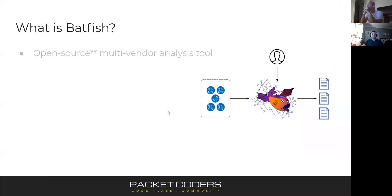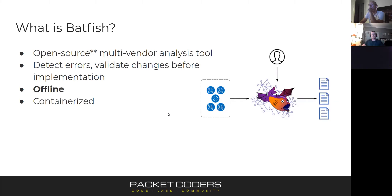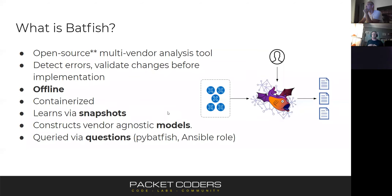So what is Batfish? Batfish is an open source multi-vendor analysis tool that allows you to detect errors and validate changes before they're implemented in your network. It's an offline tool — a containerized service that you spin up. The way it learns about your network is via things known as snapshots. It constructs vendor-agnostic models about your network from those snapshots, and then you query these models via things known as questions.